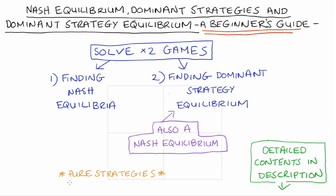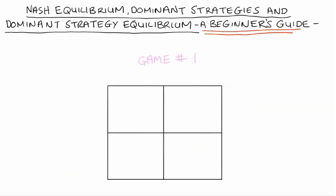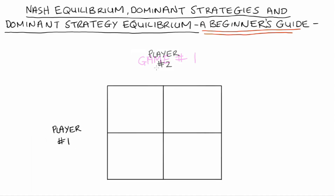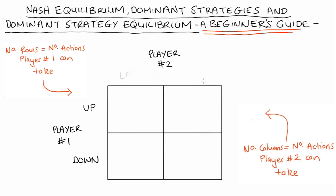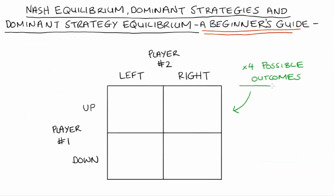Alright, let's start. For game number one I'm going to start with a two-by-two matrix. I'll put player one on the left-hand side of the matrix and player two on the top. The number of rows in our table is equal to the number of possible actions that player one can take. In this game, player one can play up — that's the first row — or down, associated with the second row. The number of columns equals the number of possible actions player two can take; player two can go left, the first column, or right, the second column.